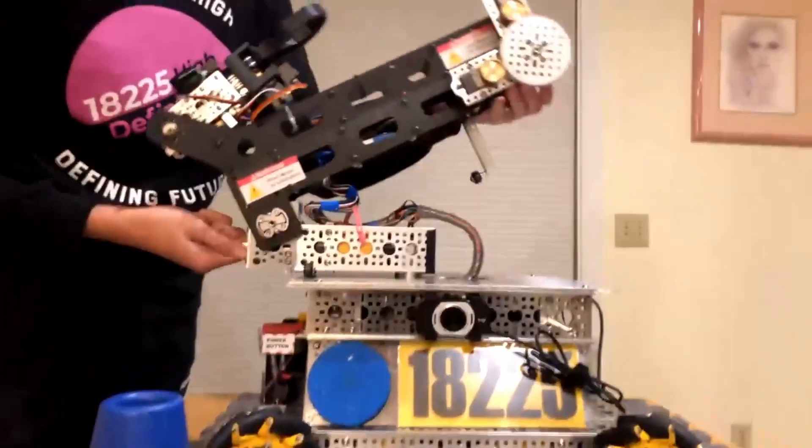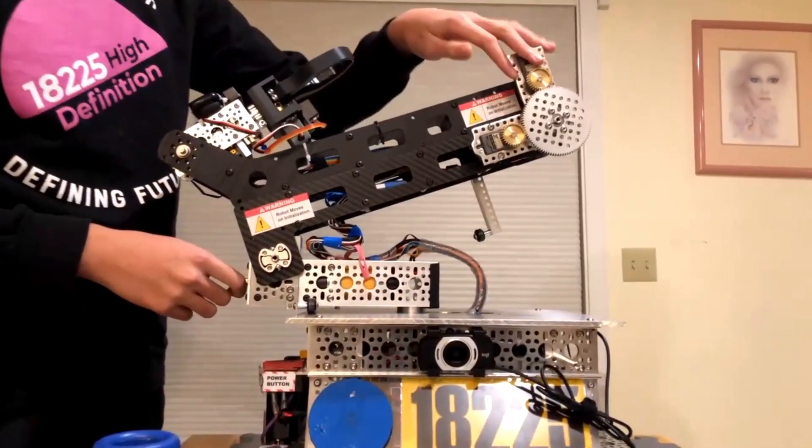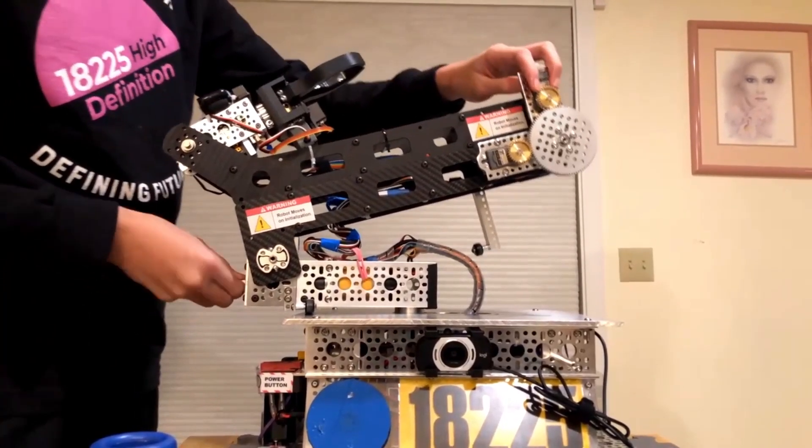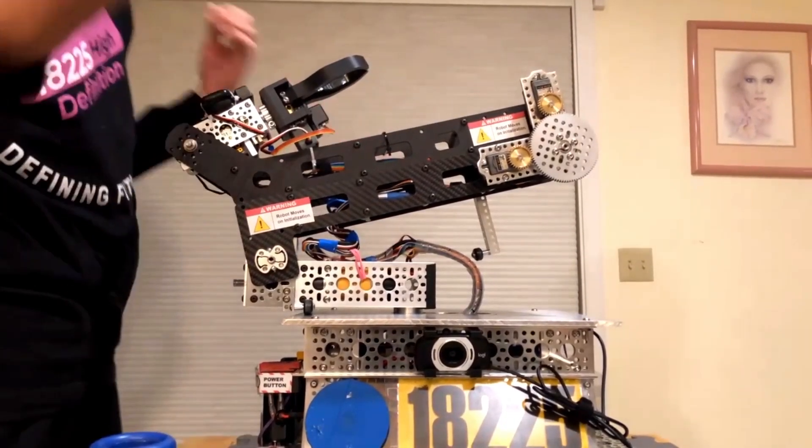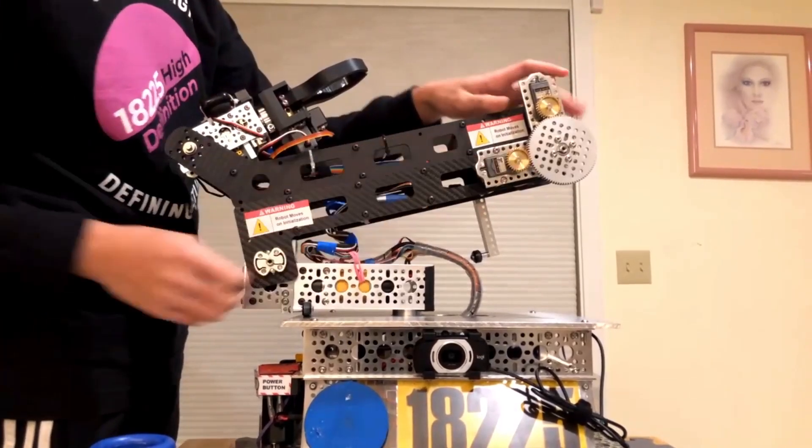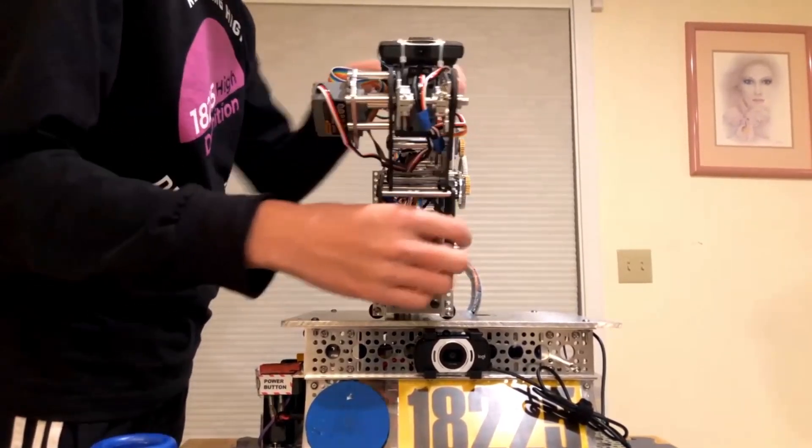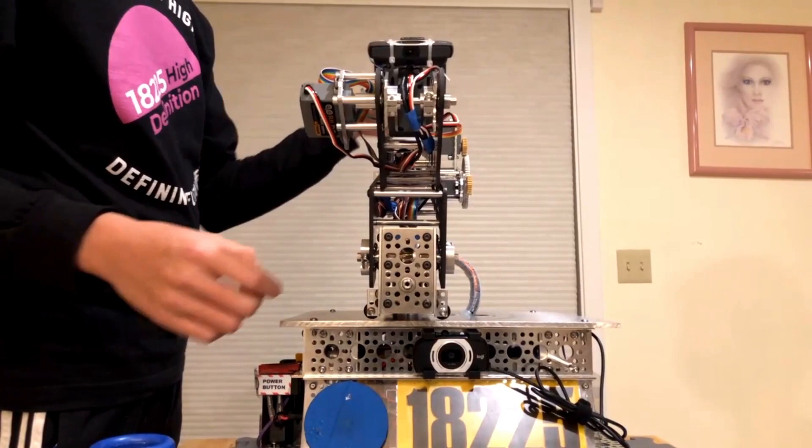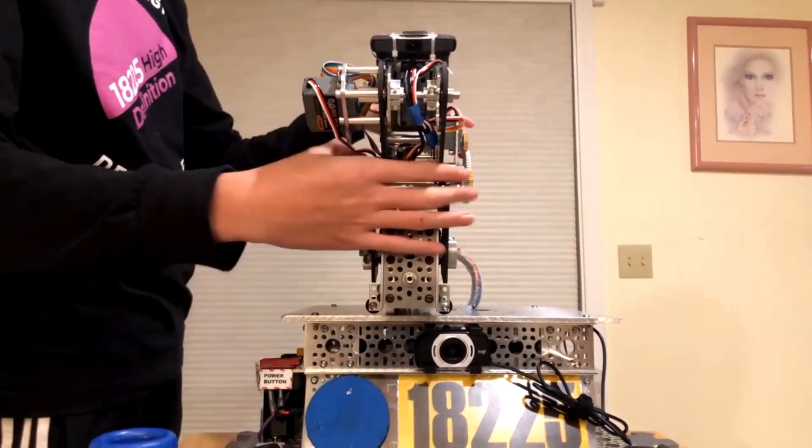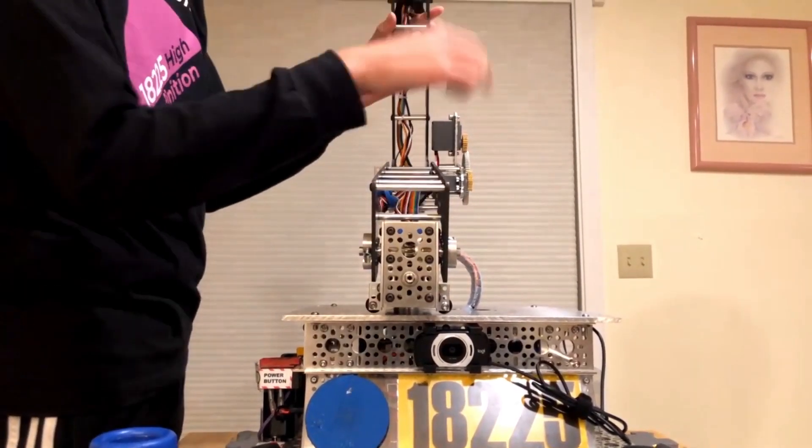So this joint, basically the league one issue with this joint was that it was rather slow. So in order to up the speed, we were thinking about using Axon, but currently what we're doing is we're just wiring two servos onto the control hub and powering that way, in parallel.